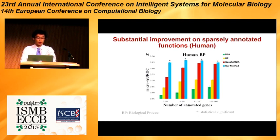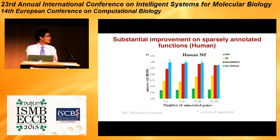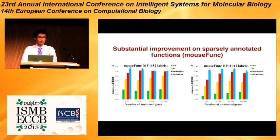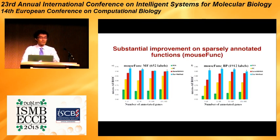We can see the idea of less is more here. By doing dimensionality reduction, although we may lose some information in the network, we actually get much better prediction performance. We also observed the same experimental results on the human molecular function category and on the yeast dataset for both molecular function and biological process categories. We also observed the same results on the mouse function dataset, where GeneMANIA has the state-of-the-art result, but our method still substantially improved on sparsely annotated functions and achieved similar results on densely annotated functions.